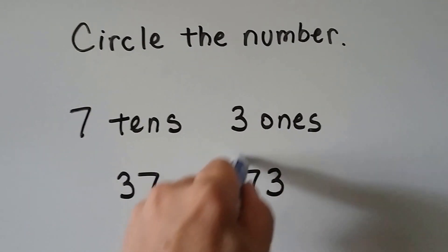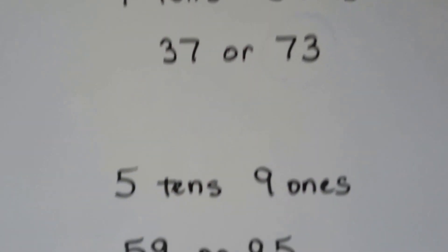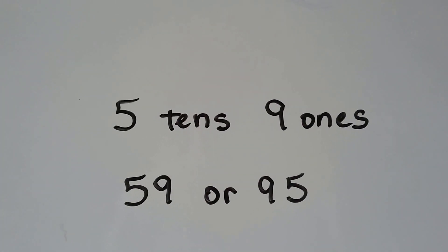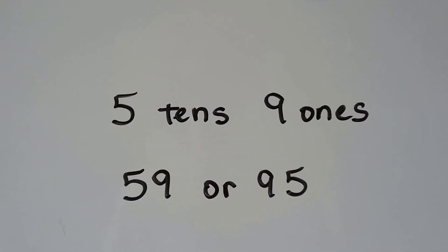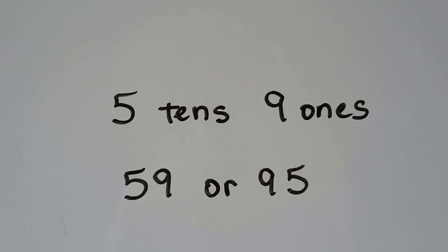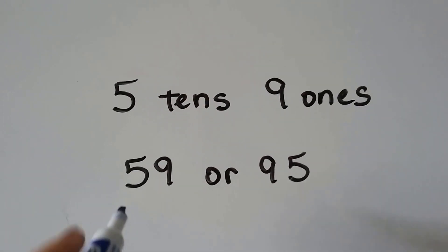How about this one? Five tens and nine ones. Is it this number or this number? Well, there's a five in the tens place, so it would be that one, wouldn't it? That's got five tens and nine ones.